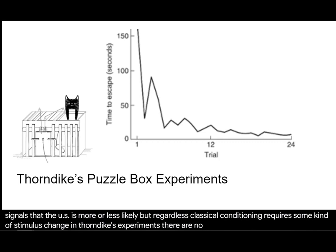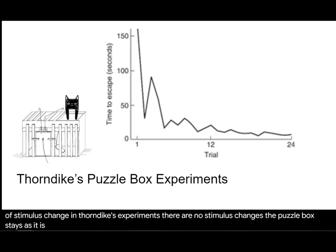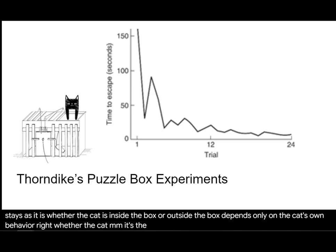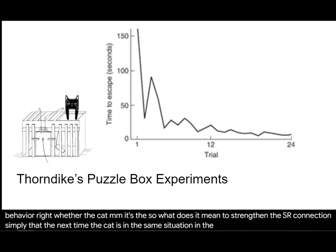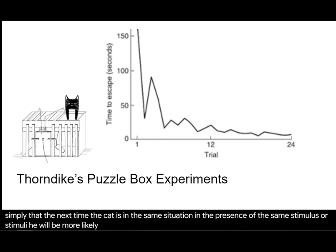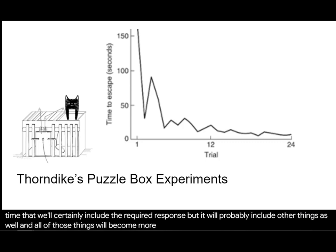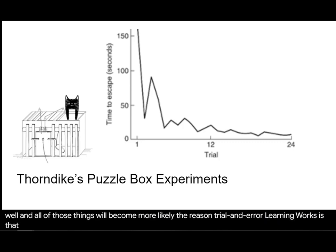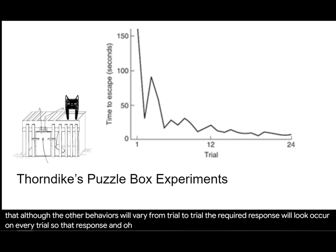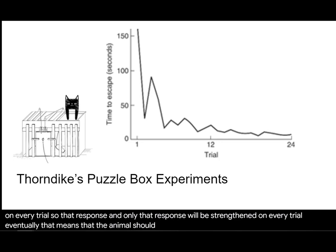In Thorndike's experiments, there are no stimulus changes. The puzzle box stays as it is. Whether the cat is inside the box or outside the box depends only on the cat's own behavior — whether the cat emits the required response. So what does it mean to strengthen the SR connection? Simply that the next time the cat is in the same situation, in the presence of the same stimulus or stimuli, it will be more likely to do whatever it was doing around the time the box opened last time. That will certainly include the required response, but it will probably include other things as well. And all of those things will become more likely. The reason trial and error learning works is that although the other behaviors will vary from trial to trial, the required response will occur on every trial. So that response and only that response will be strengthened on every trial. Eventually, that means the animal should emit that response pretty regularly.